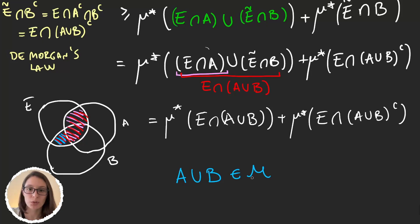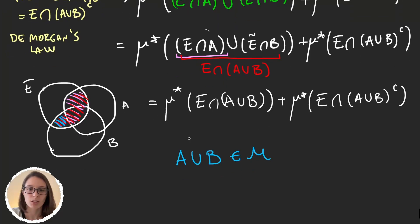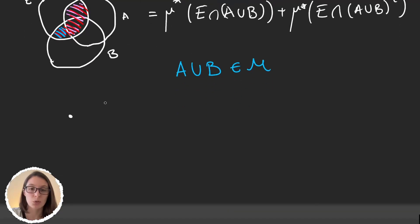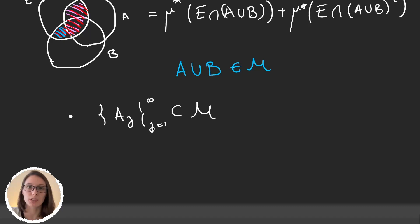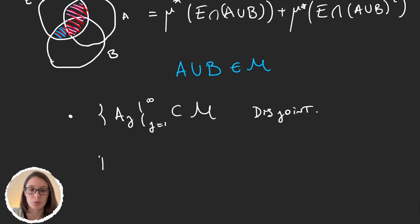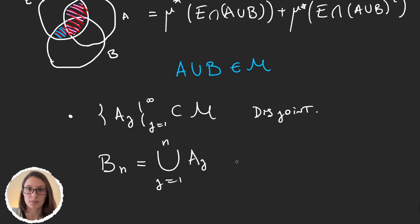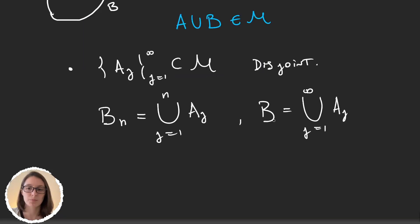So we have that M is closed under finite unions, because when we have it for the union of two elements, we have it for any finite number. Now let's prove that M is closed under countable unions of disjoint sets. For this, let {A_j} from j = 1 to ∞ be a sequence of sets in M, so A_j is measurable for any j, and let's take these sets to be disjoint. Call B_n the union from j = 1 up to n (a finite union), and call B the union up to infinity. What we want to prove is that B is an element in M, that is, B is measurable.